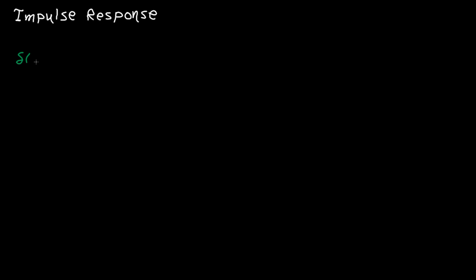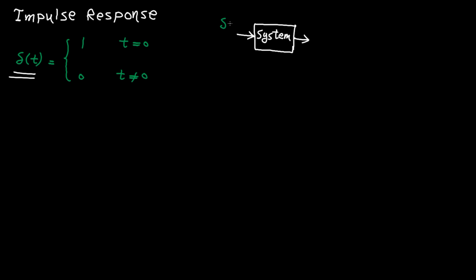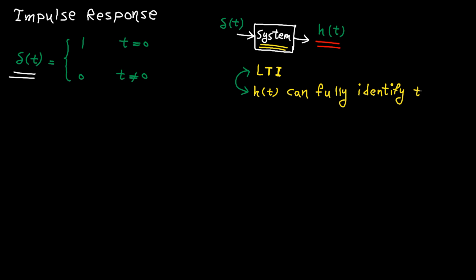The next topic I want to cover in this tutorial is impulse response. Just to refresh your mind, a unit impulse function is one at the origin and zero everywhere else. Now, if you apply this signal to a system, the output is called the impulse response, which is commonly shown by H(T). So the impulse response, as the name shows, is the response to the impulse function. If the system is LTI, H(T), or the impulse response, can fully identify the system. For an LTI system, H(T) can fully identify the system.